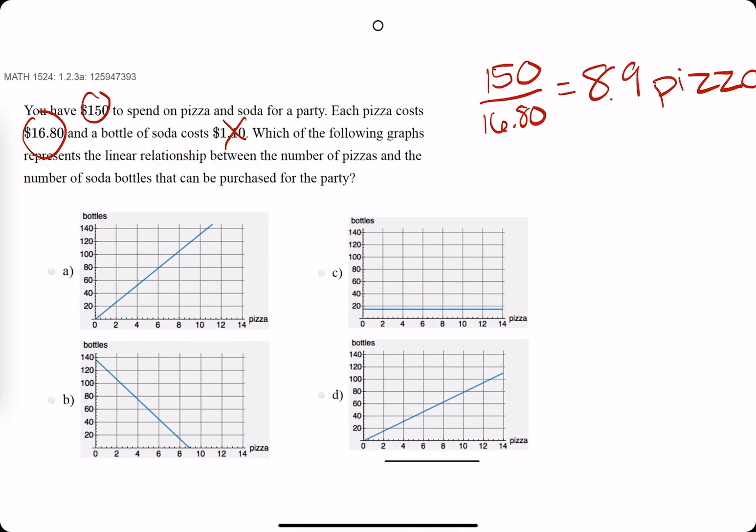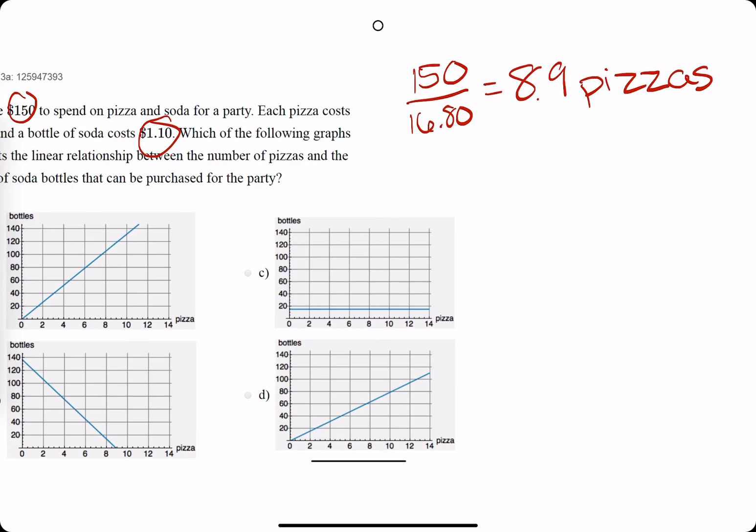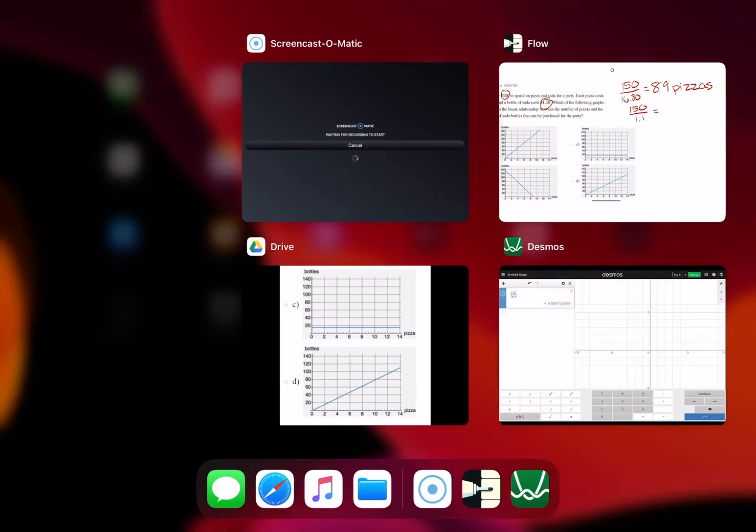So then we say, okay well how many sodas can we buy if we are not buying pizza? So we're getting rid of $16.80. Focusing on the $1.10. So we do $150 divided by $1.10. We're trying to find out how many sodas we can buy.